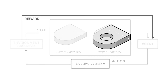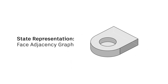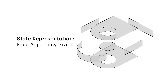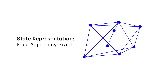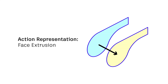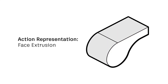To represent the state, we use a face adjacency graph derived from the native boundary representation used in Parametric CAD. To represent actions, we use face extrusions that connect a start face and an end face together with a Boolean operation to form a solid.